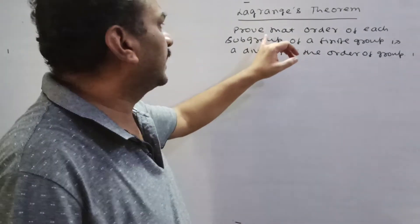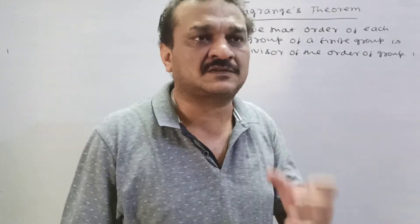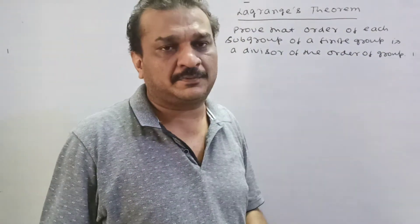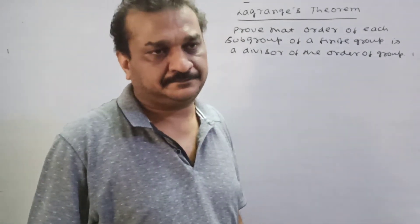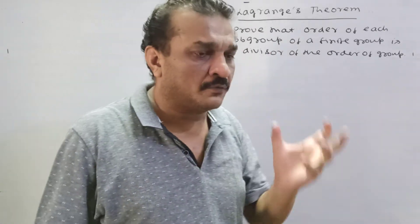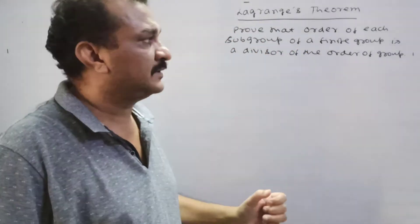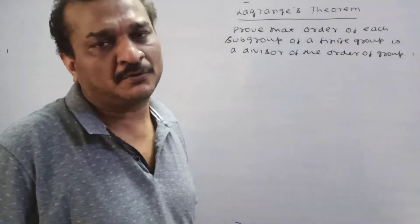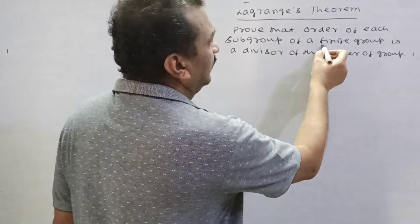Can we prove that the order of each subgroup of a finite group is a divisor of the order of the group? The order of each subgroup of a finite group is a divisor of the order of the group.